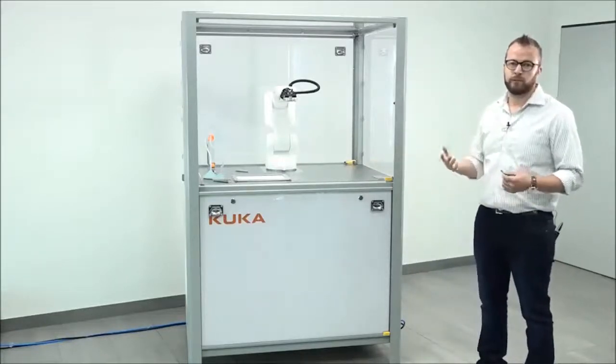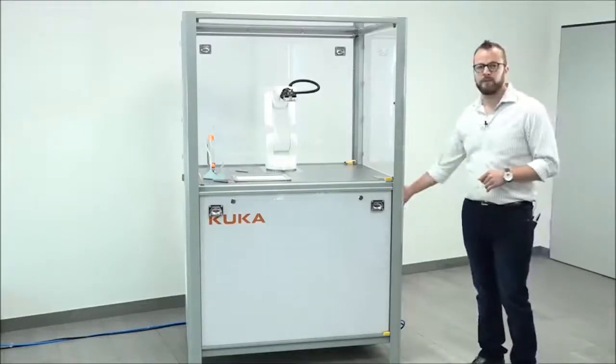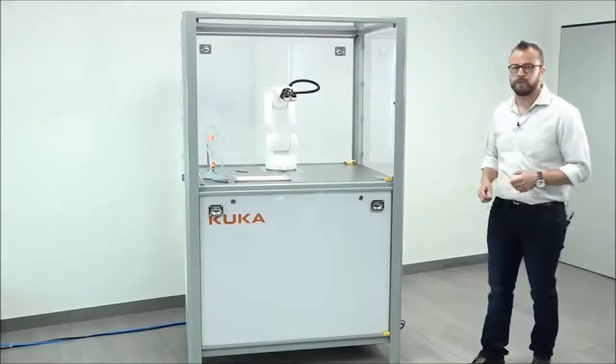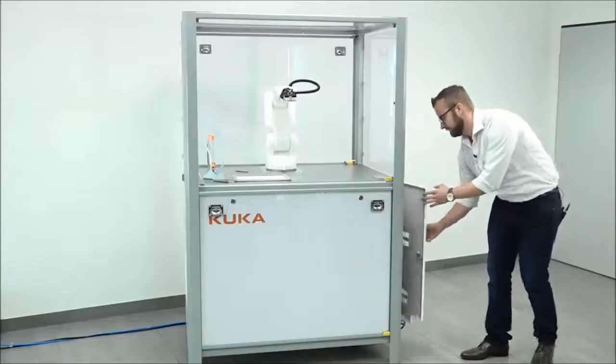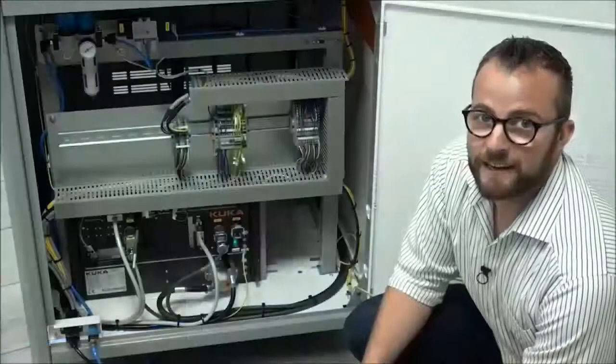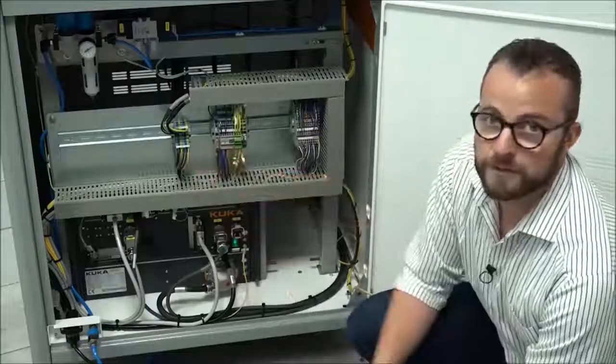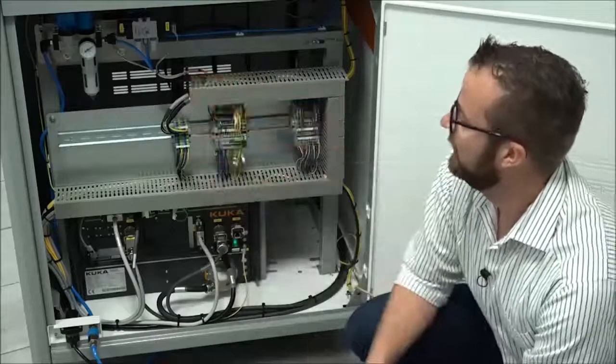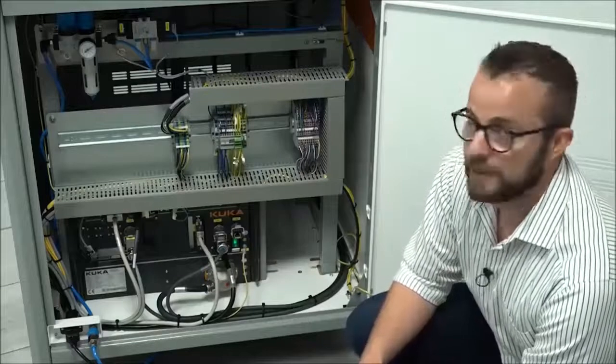The electrical components are placed on the right side. There's a lot of space for customer-specific installations. Above the electrical components, the pneumatic components are located. They are necessary for the closing and opening of the gripper.